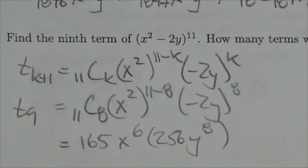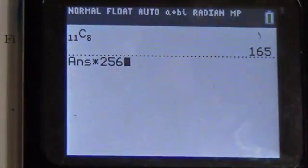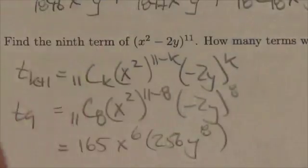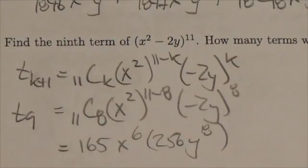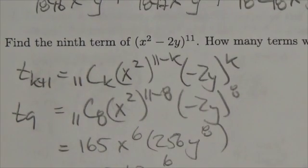And now I've just got to multiply those together. So 165 here times 256. So our coefficient will be 42,240. 42,240 x to the 6th, y to the 8th.